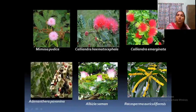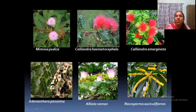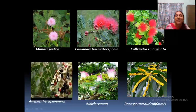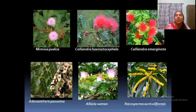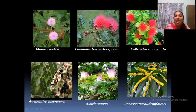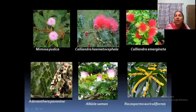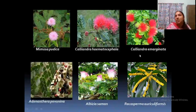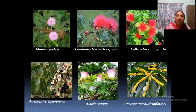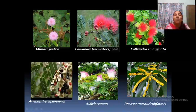Adenanthera pavonina — manchadi — is a tree available in our areas. Albizia saman was in our campus in the car parking area, a big tree, but it was cut down for building construction during the lockdown period. Racosperma auriculiforme is a very common plant. These are some important plants available in our area that you can use for preparing herbarium. By looking at the flower you should be able to identify which family it belongs to.